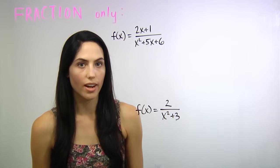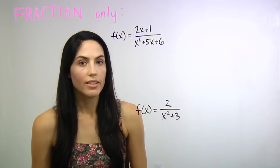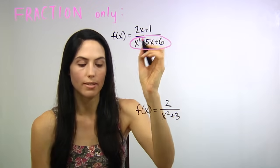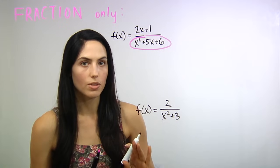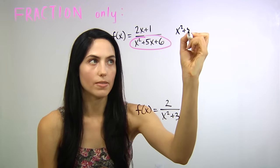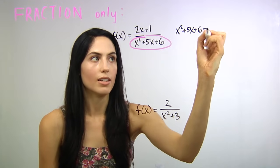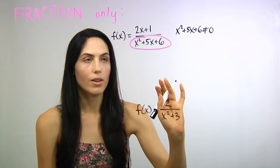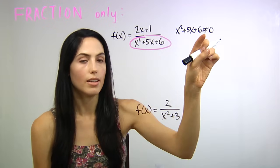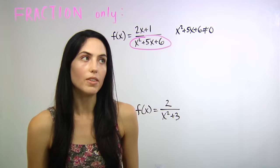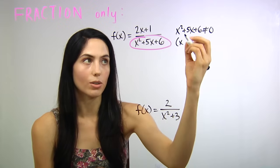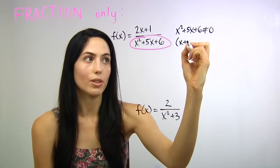Say you have just a fraction. To find the domain, all you have to do is take the bottom, whatever that may be, and set it not equal to 0. So in this example, we have x squared plus 5x plus 6, not equal to 0. Notice that it doesn't matter what the top is — just take the bottom and set it not equal to 0. You can solve this just as if it were a normal equality, and that involves factoring. If you need help with factoring, you can look at one of my other videos.